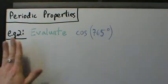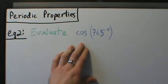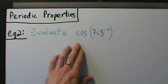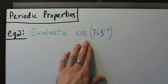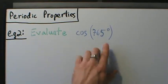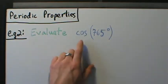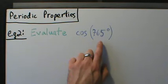Here's example two with using periodic properties to evaluate a trig function. So evaluate cosine of 765 degrees. First of all, cosine has period 2π, or the same thing as 360 degrees. So here the angle is given in degrees, so let's just discuss this in terms of degrees. So the period of cosine is 360 degrees.